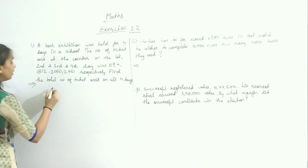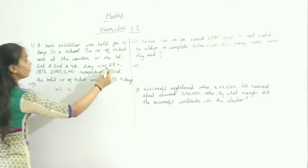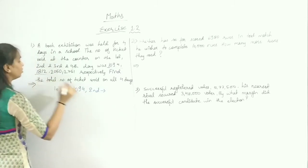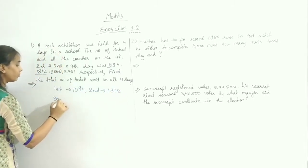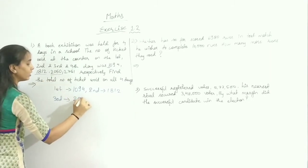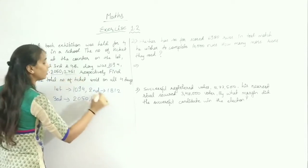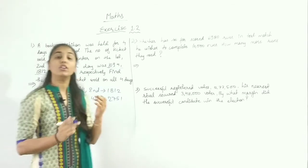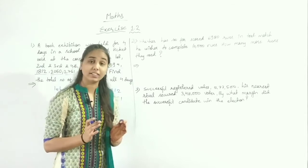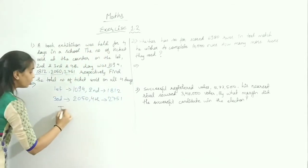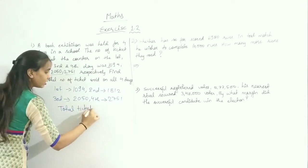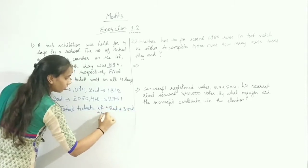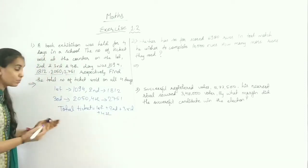On the 1st day, 1094 tickets were sold. 2nd day, 1812. 3rd day, 2050. And 4th day, 2751. We are asked to find the total number of tickets sold on all 4 days. So total tickets equals 1st day plus 2nd day plus 3rd day plus 4th day.